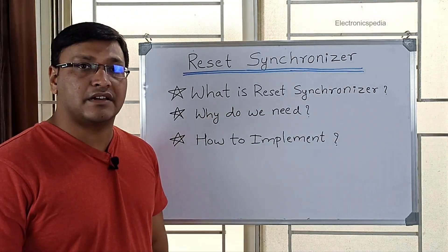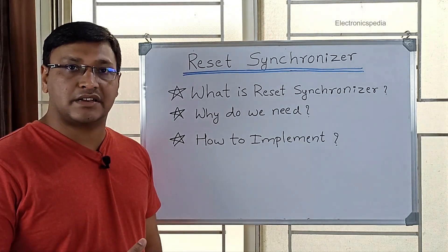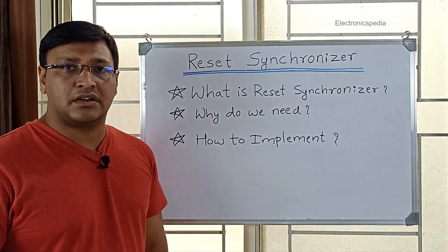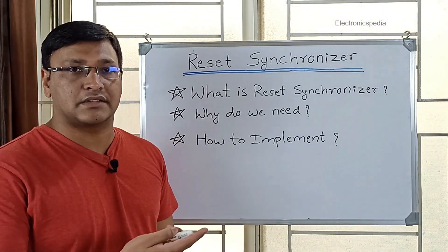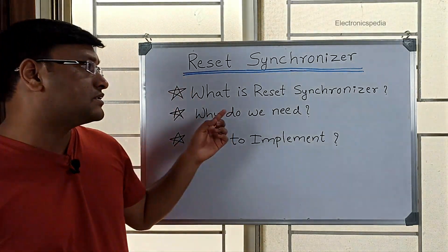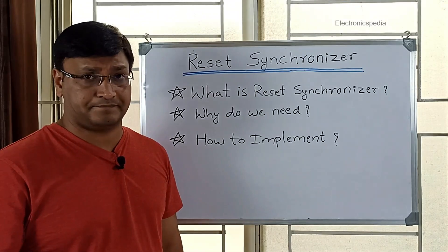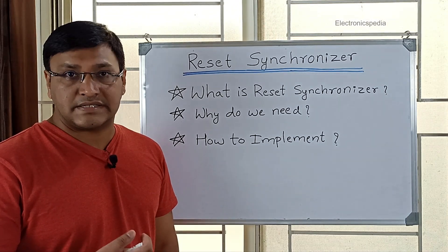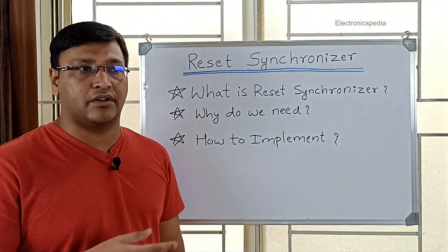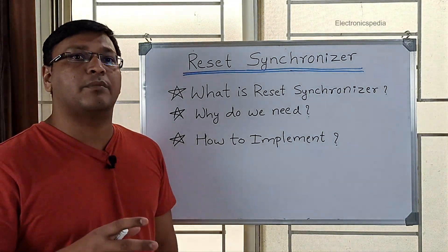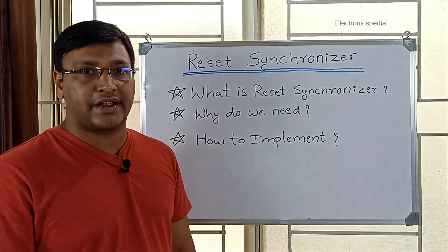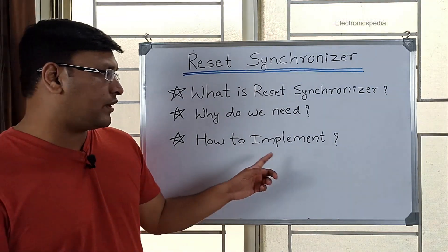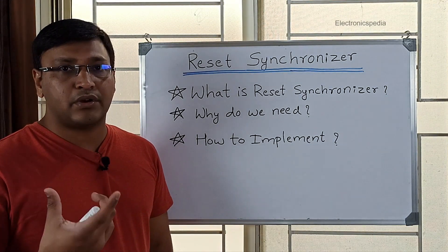A reset synchronizer is a technique to synchronize the reset that is going from one clock domain to another clock domain, similar to how data synchronizers work. If you are not synchronizing the reset when it is moving from one clock domain to another, you might end up in a metastability condition. Similar to data synchronizers, we also need a reset synchronizer.